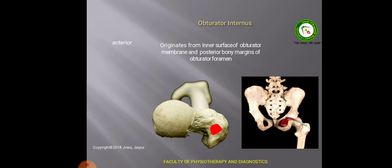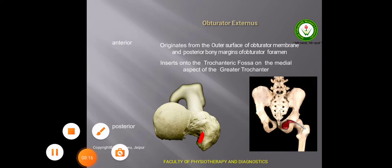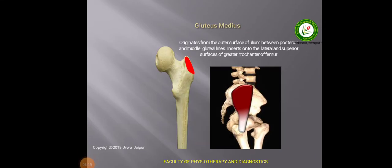The obturator internus muscle arises from the inner surface of the obturator membrane and inserts on the medial surface of the greater trochanter, as highlighted in the image. The obturator externus arises from the external surface of the obturator membrane and inserts on the trochanteric fossa — a depression on the medial aspect of the greater trochanter. The gluteus medius muscle arises from the gluteal surface of the hip bone and inserts on the lateral surface of the greater trochanter of the femur.